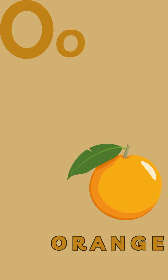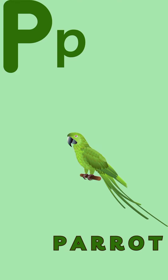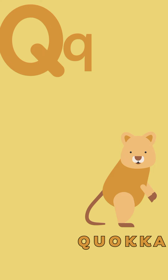O for Orange. O, R, A, N, G, E. Orange. P for Parrot. P, A, R, R, O, T. Parrot.